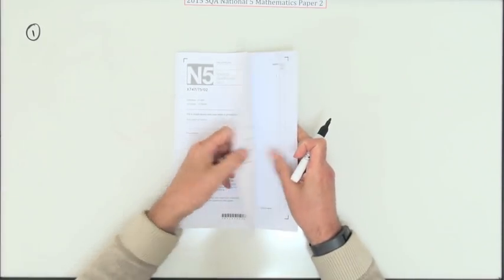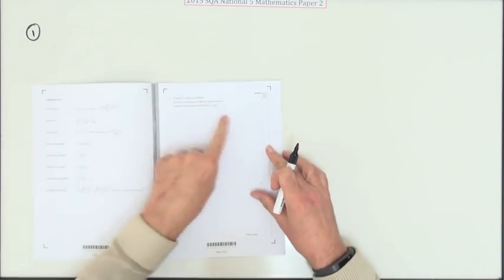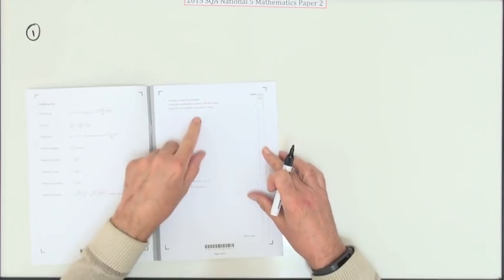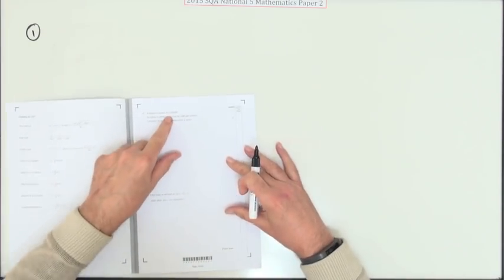So here's paper two from the National Five. The first one, nice little one here. It's only two years as well, so if you wanted you could plod through it the long way, but you wouldn't.